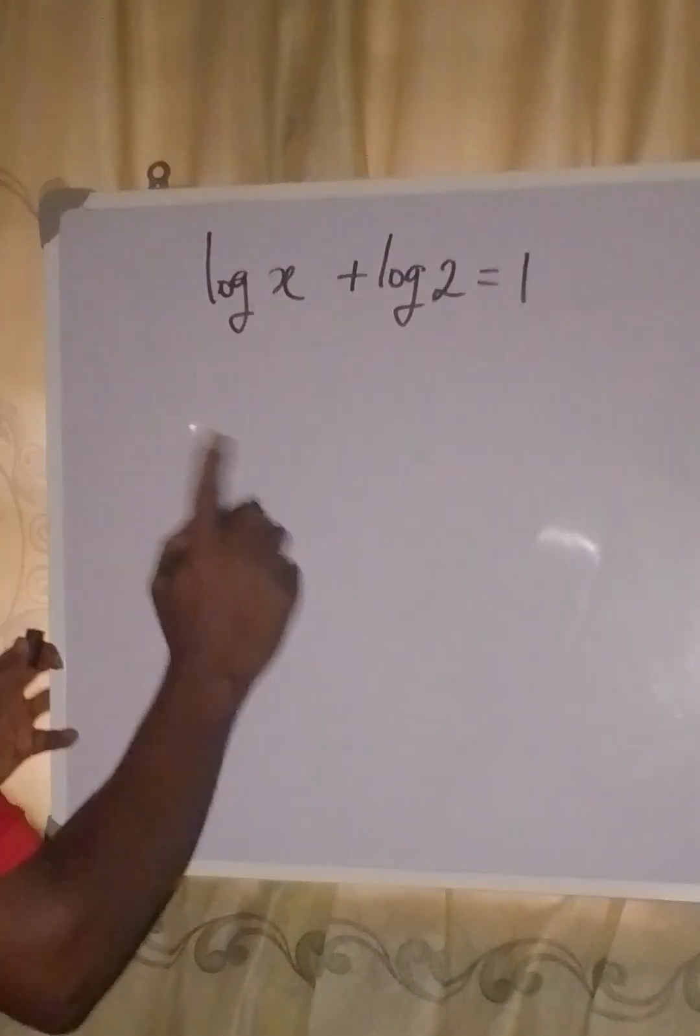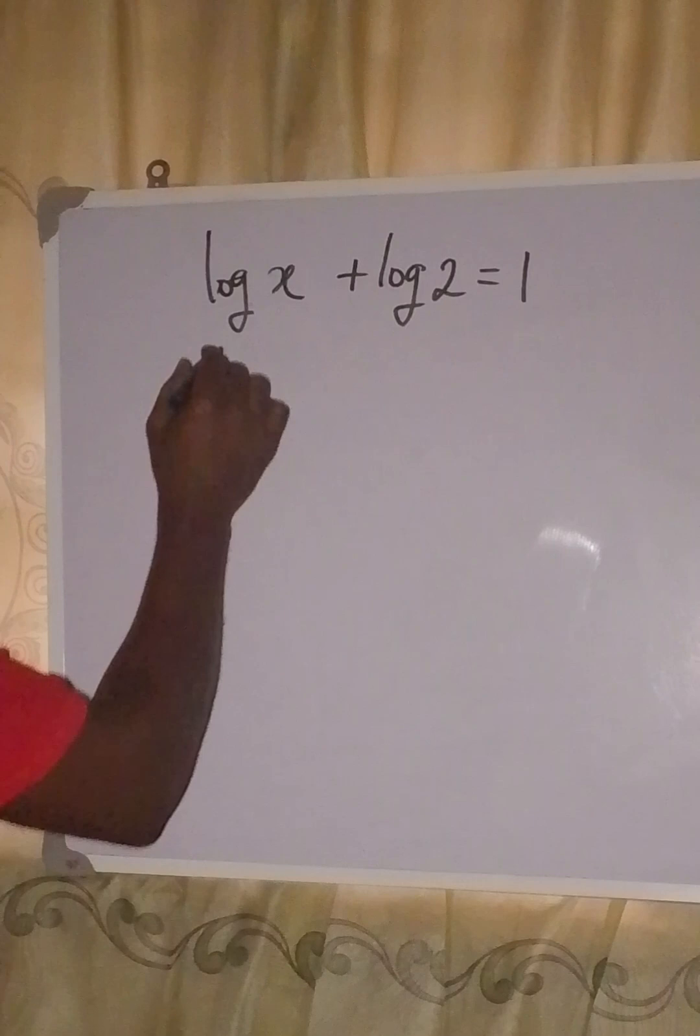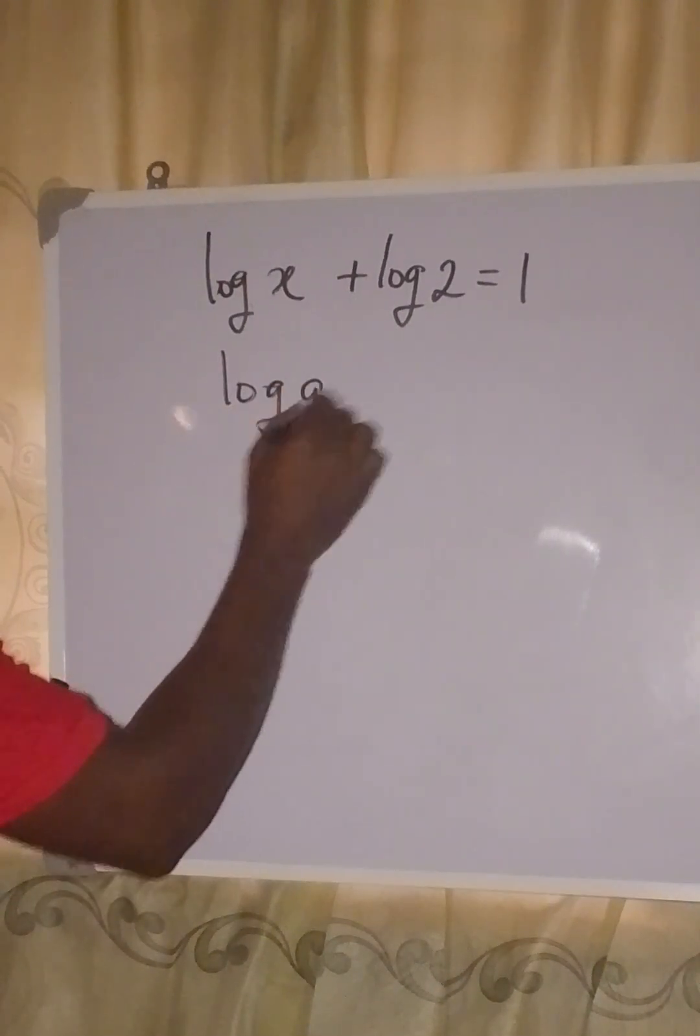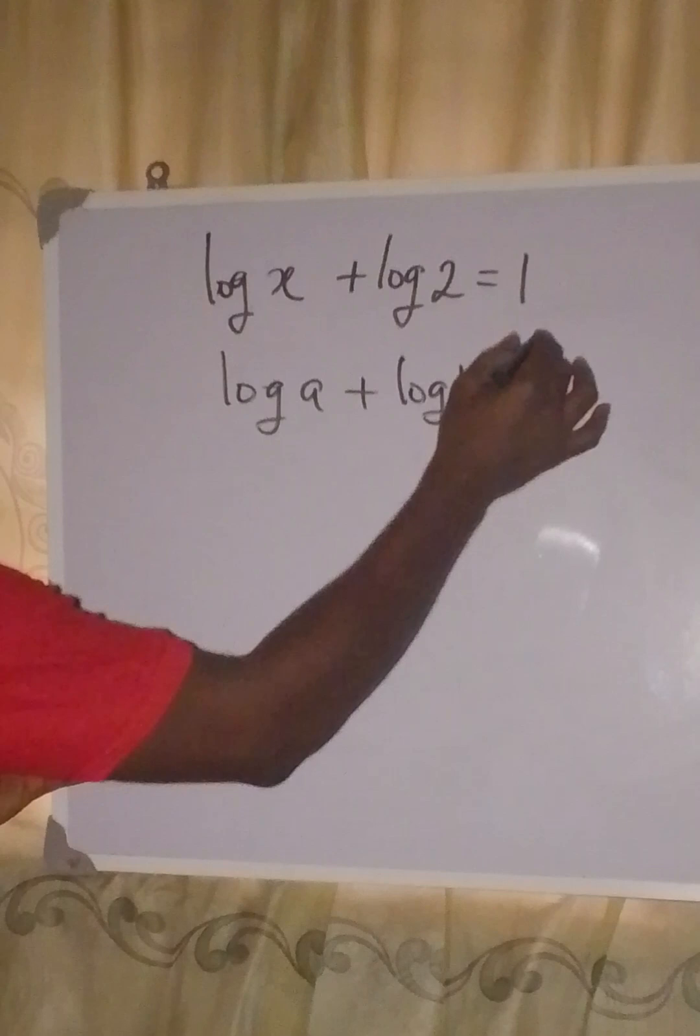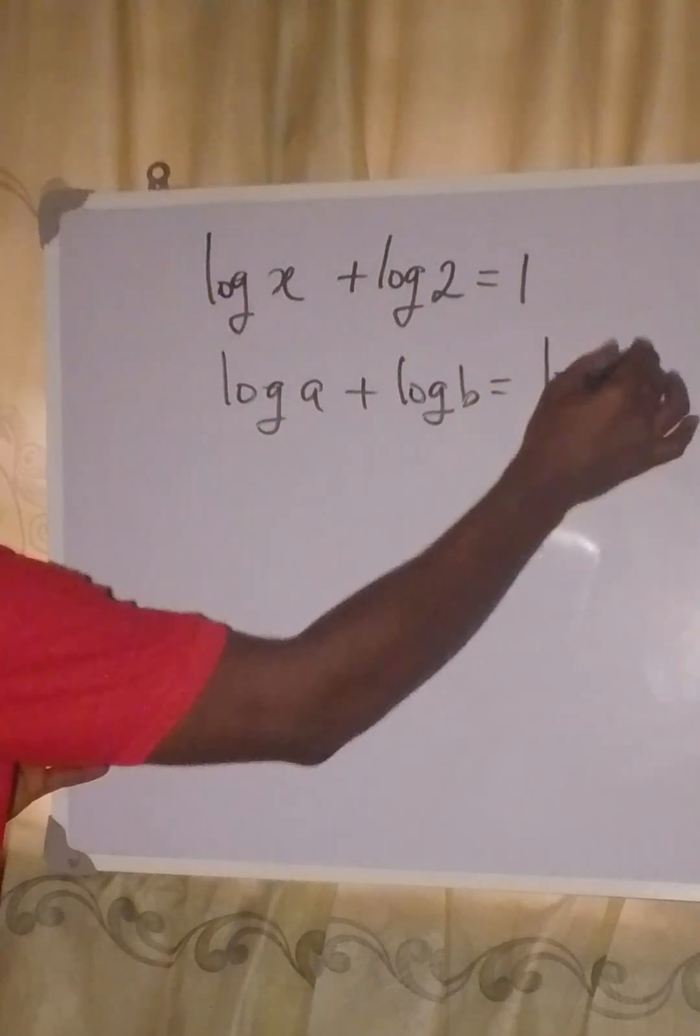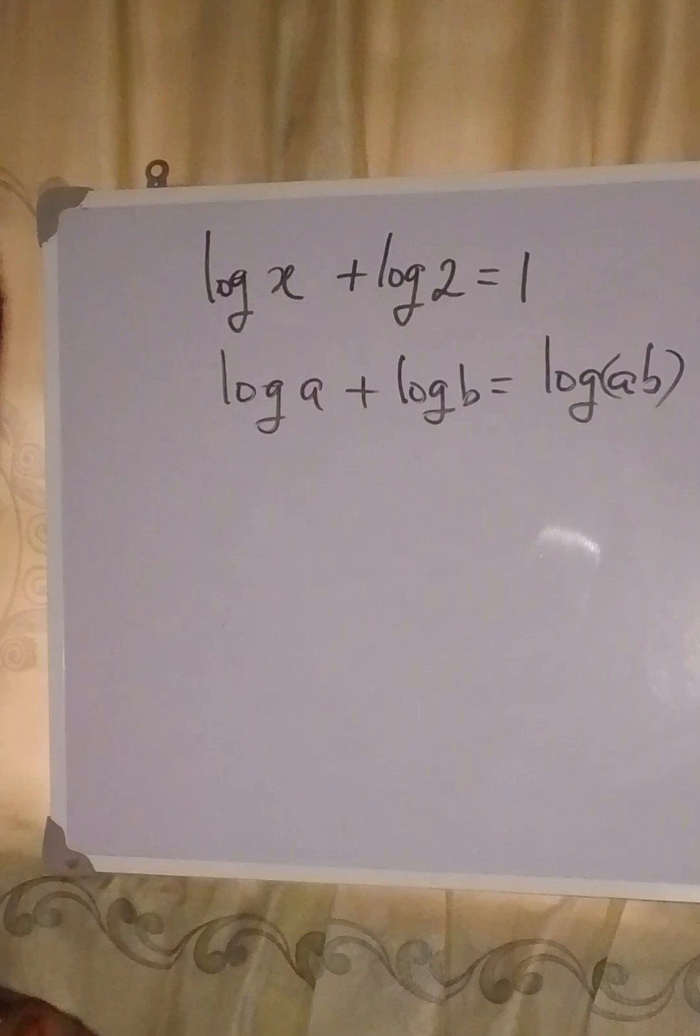If you have log x plus log 2 equals 1, what do you do? You obey one of the laws of logarithm that says if you have log a plus log b, this is the same thing as log a times b.